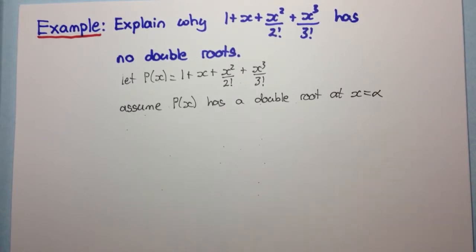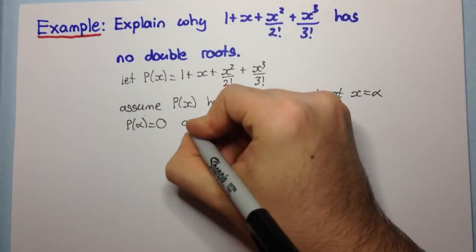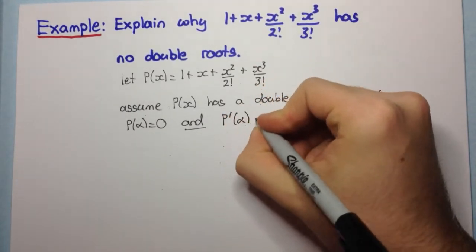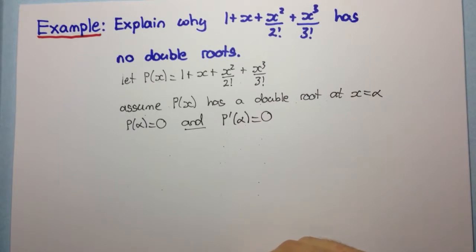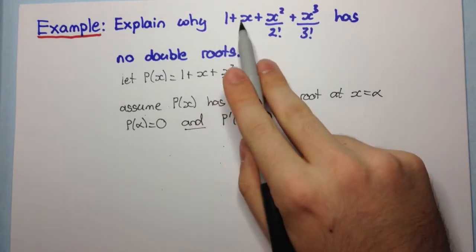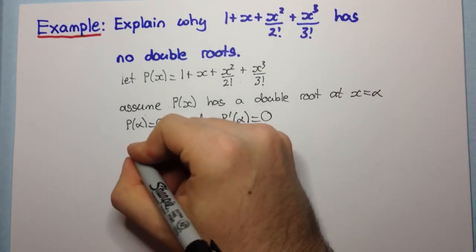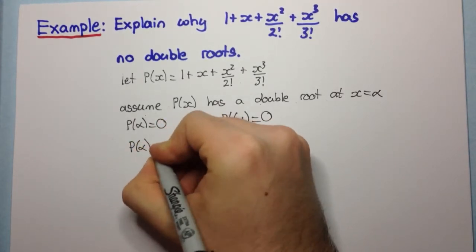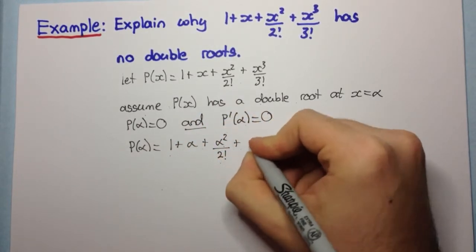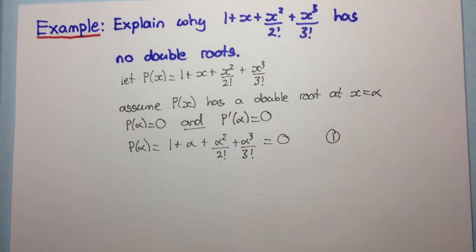If it has a double root at x equals alpha, then by the multiple root theorem, p of alpha equals 0 and p dash alpha equals 0. So p of alpha equals 1 plus alpha plus alpha squared over 2 factorial plus alpha cubed over 3 factorial, and that's equal to 0. Let's call that equation 1.